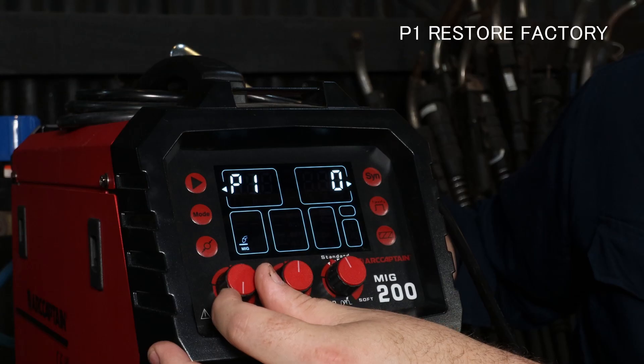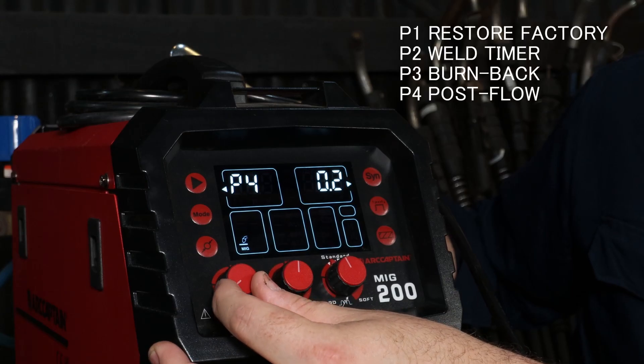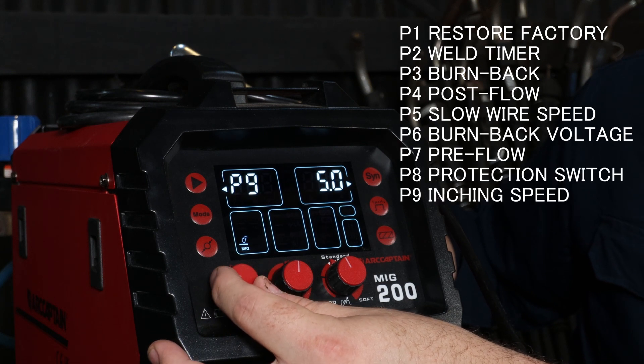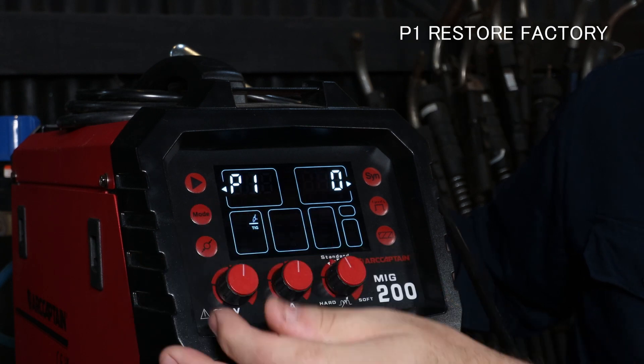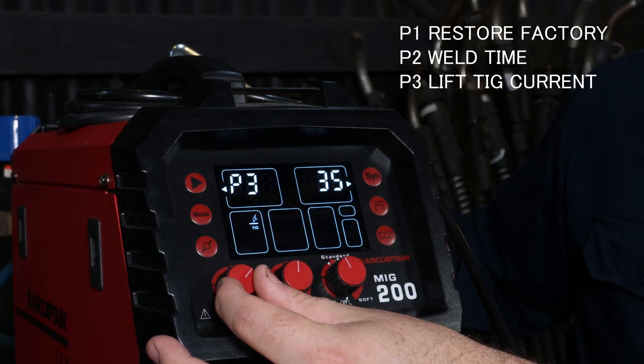This machine has the ability to go into the parameters and adjust up to eight settings in MIG welding, five in manual metal arc welding or stick, and three in TIG welding. A $5,000 welding machine that I use at work that's only two months old doesn't have any of these features.